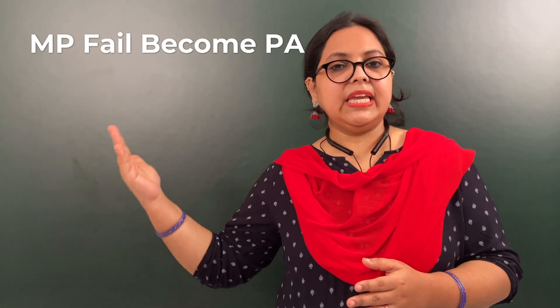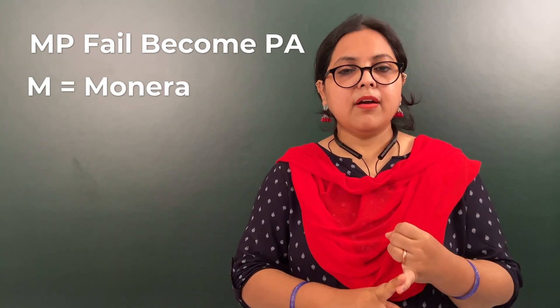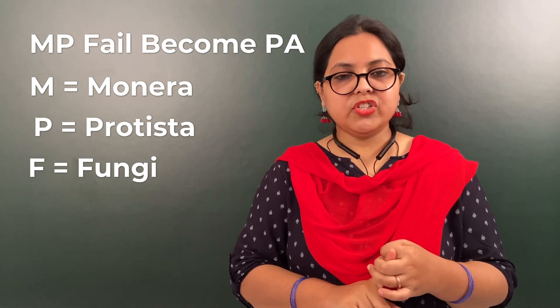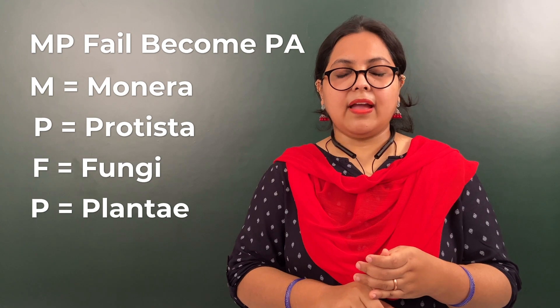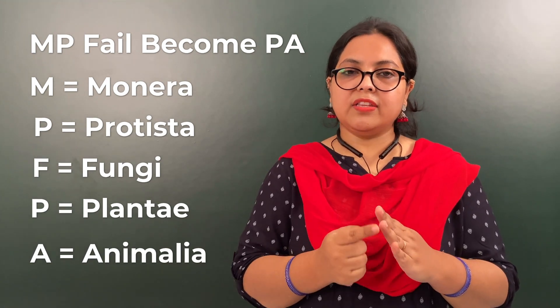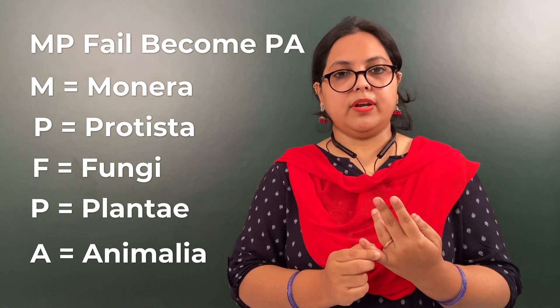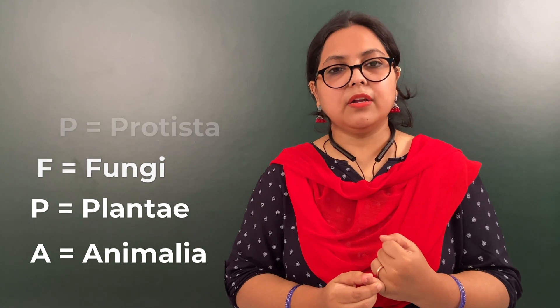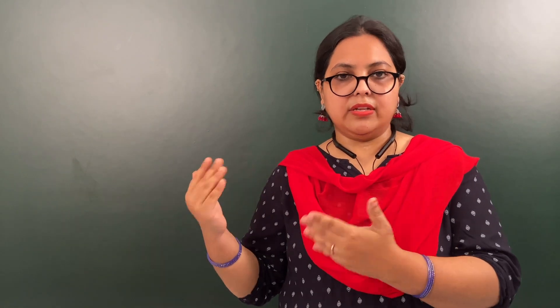You all know about the five kingdom classification. If you want to learn them in sequence, I have a shortcut: just remember 'MP FAIL and becomes PA'. M stands for kingdom Monera, P for kingdom Protista, F for kingdom Fungi, P for kingdom Plantae, and A for kingdom Animalia. All organisms of kingdom Monera are made up of prokaryotic cells, and the rest — Protista, Fungi, Plantae, and Animalia — are made up of eukaryotic cells.